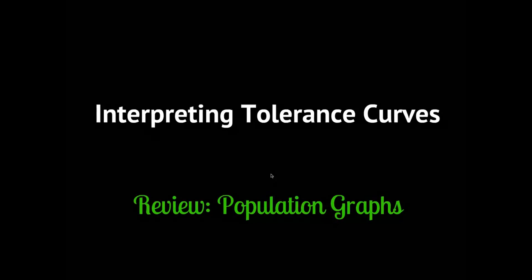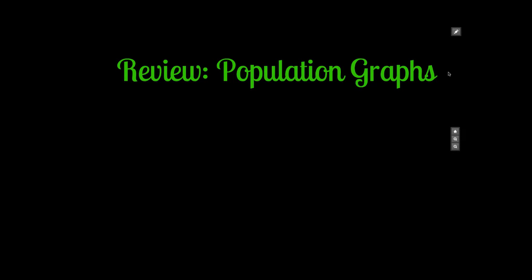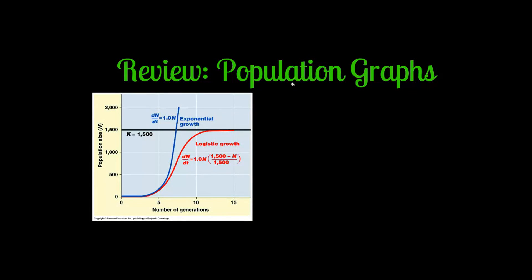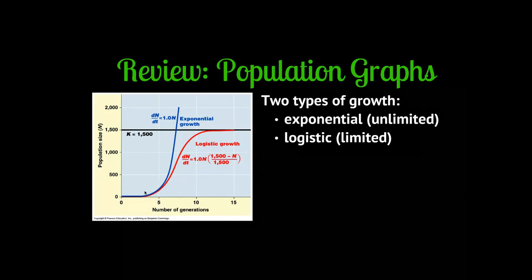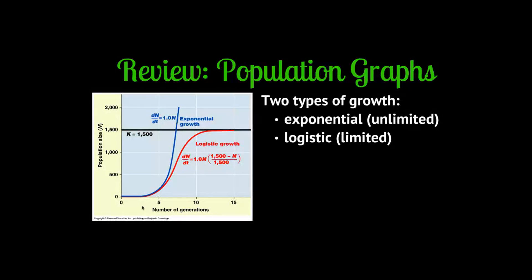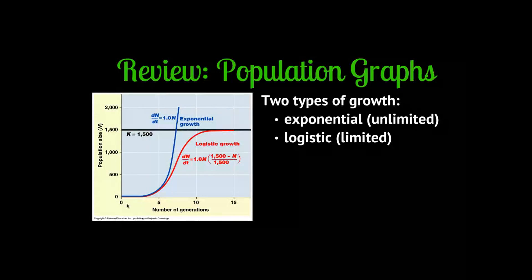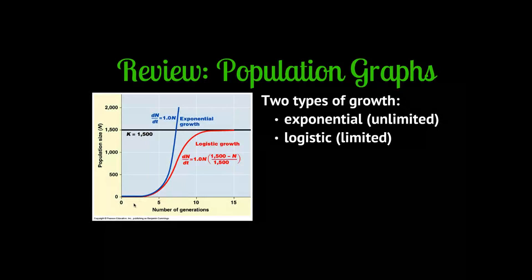One way we're going to look at it is we're going to go back to our population graphs that we looked at a few days ago. We graphed different types of population growth - exponential growth and logistic growth. But what's important to note is how we made those graphs. On the x-axis we had time.